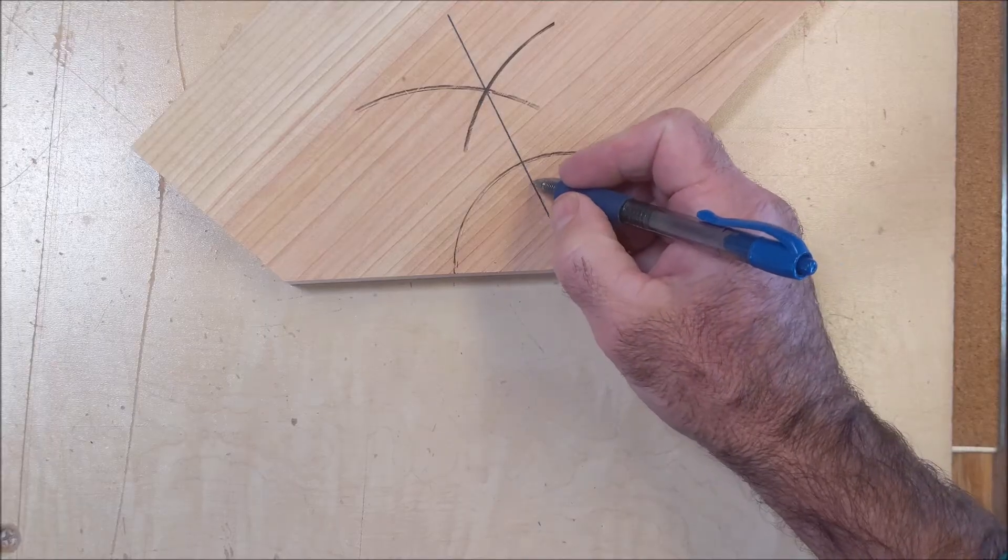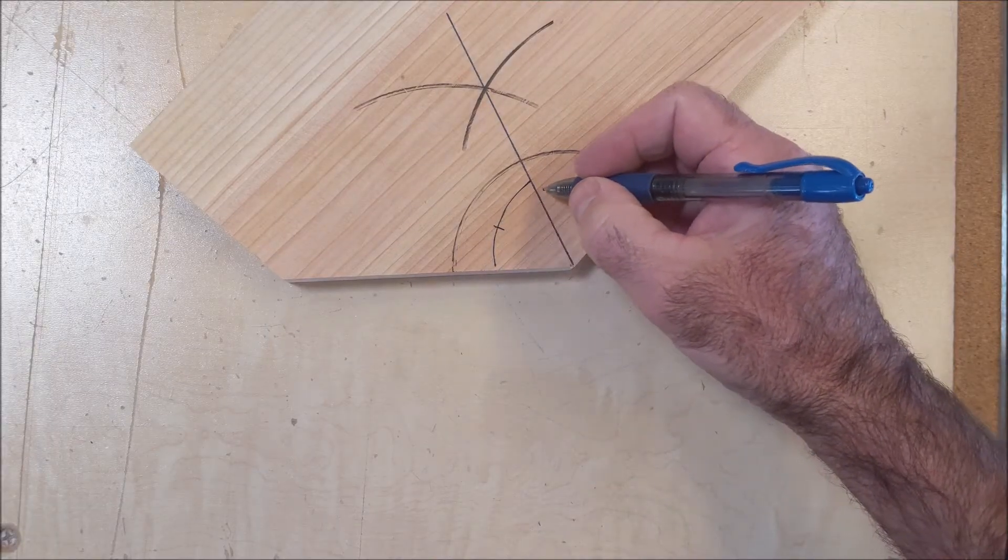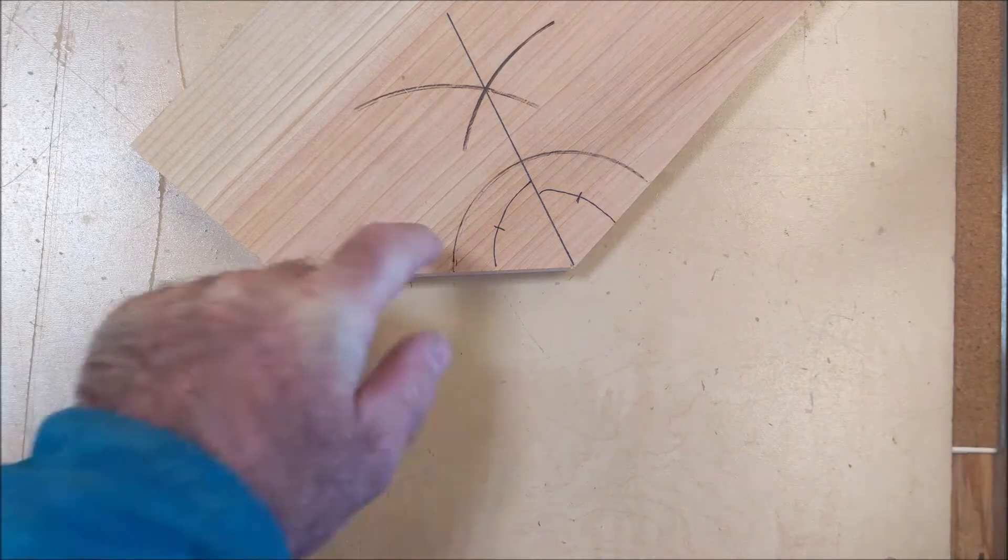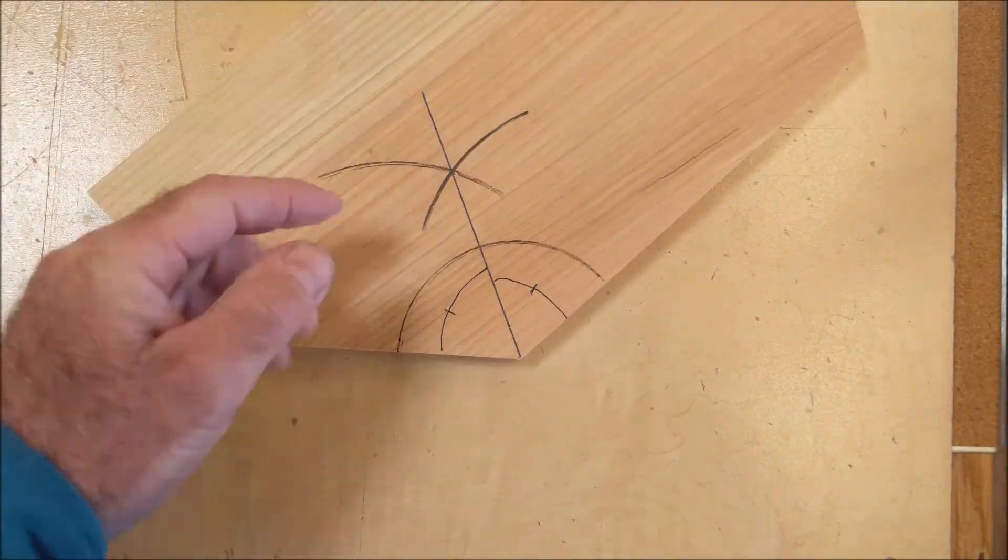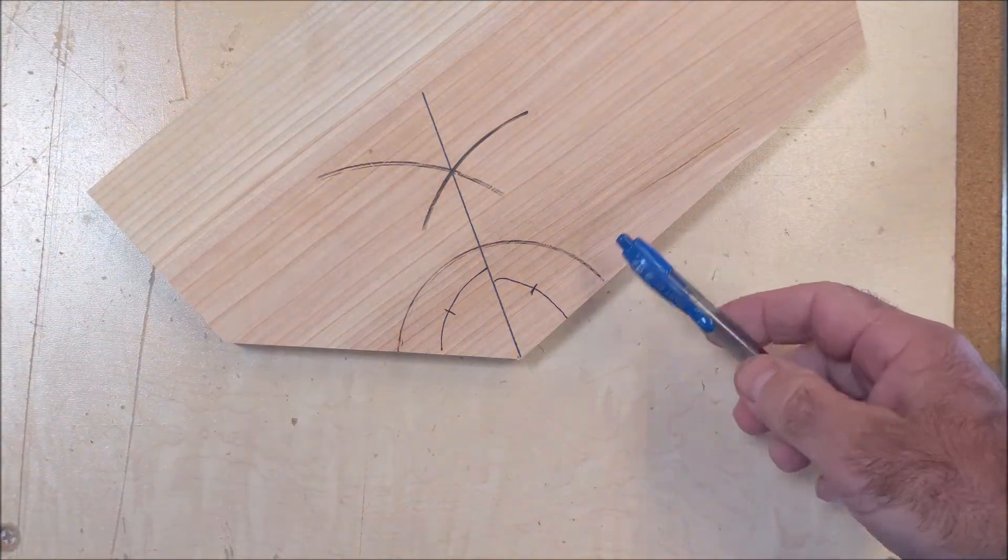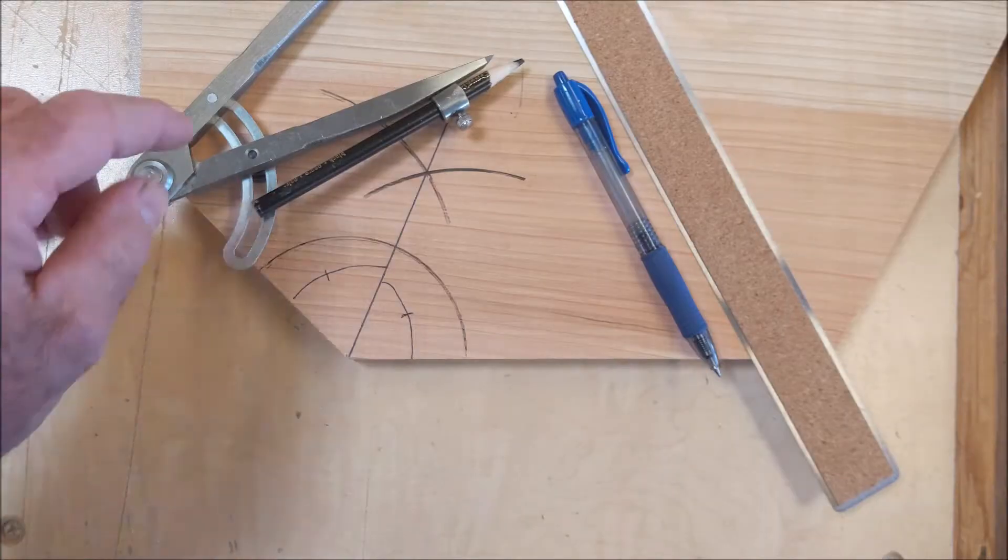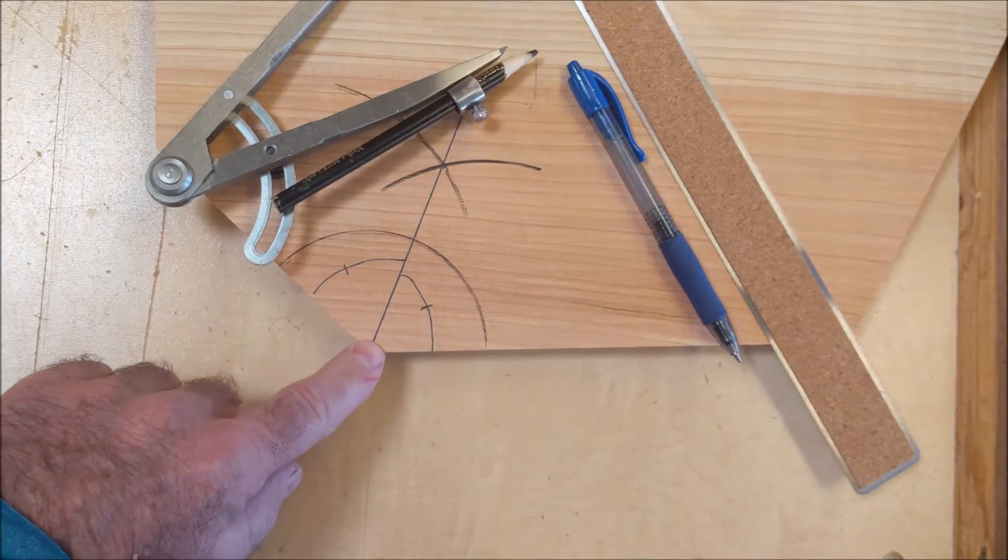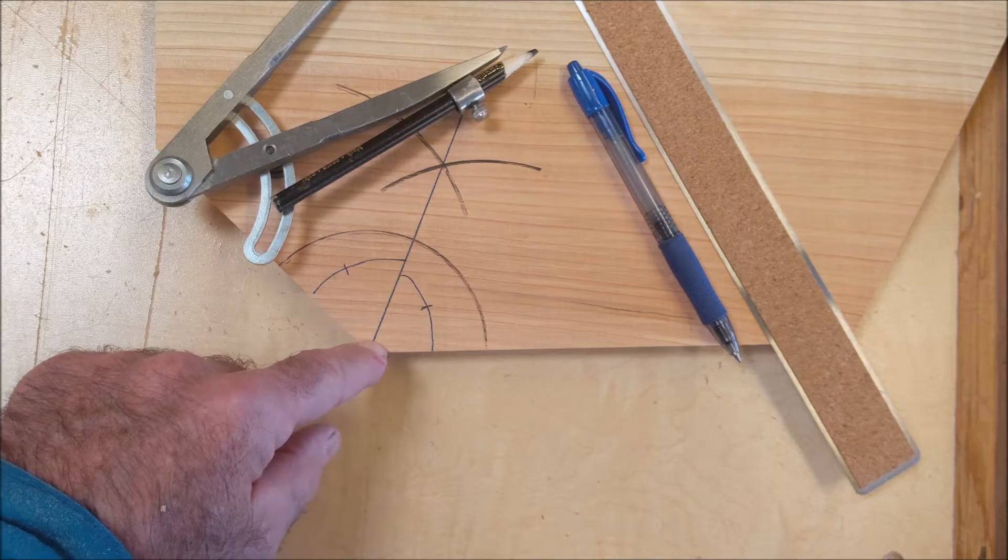So this angle right here is congruent to this angle right here. You could use this on wood. If you try and lay out parts, you could use it on metal. You could use it in construction. Okay, now that I've done one of these out in the shop, I'll put the camera over my shoulder and I'll just work on paper.